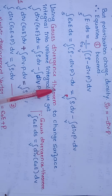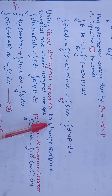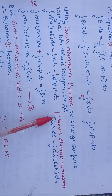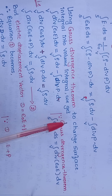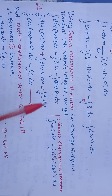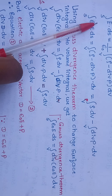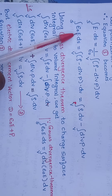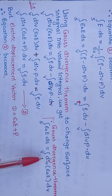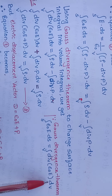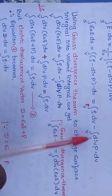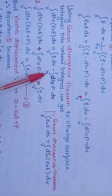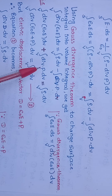By using the Gauss divergence theorem, we change the surface integral into a volume integral on the left-hand side only. Applying the Gauss divergence theorem, the surface integral of ε₀·E dot dS becomes the volume integral of divergence of (ε₀·E) dv. This equals the volume integral of ρ dv minus the volume integral of divergence of P dv.